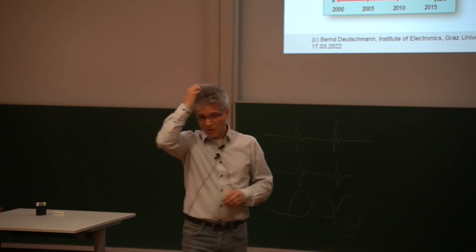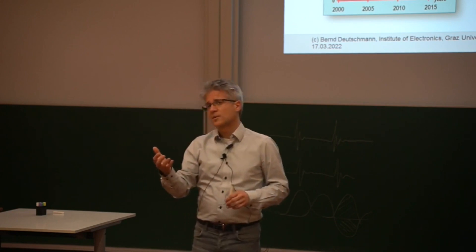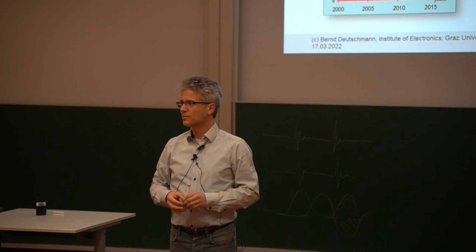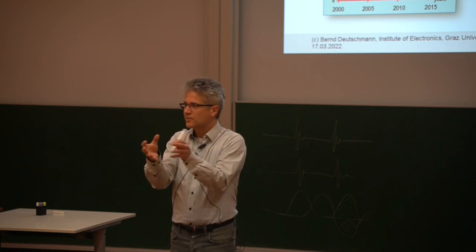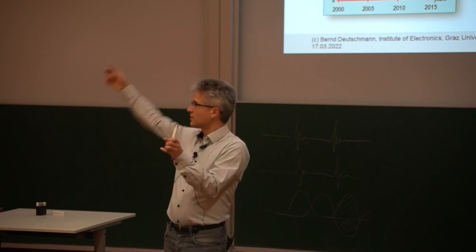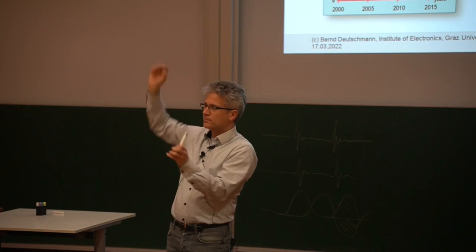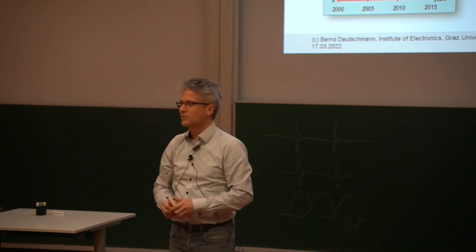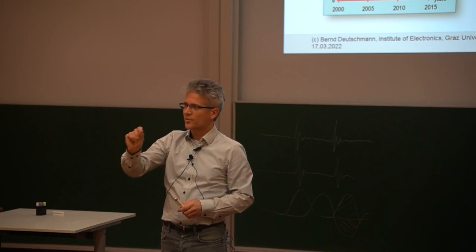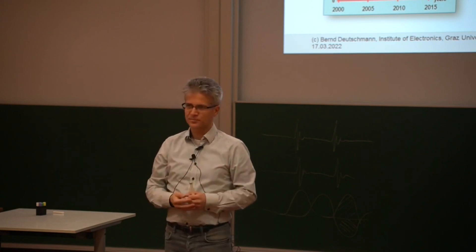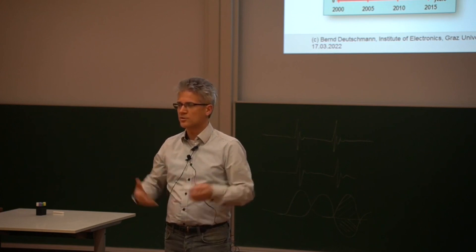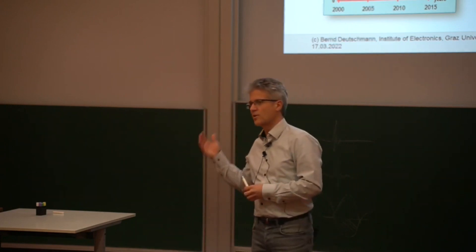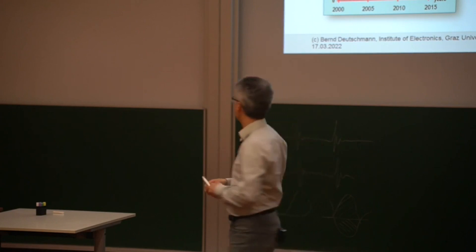On the other hand, modern technologies sometimes also get more robust — more robust against radiation, for example — because the gate area is not that big anymore. So the likelihood that a radiation particle is really hitting exactly this gate is not that high, and there is also not that much volume in the gate for charge to accumulate. So very often with modern technologies, things are getting better — at least that was the case in recent years, but not for all things. For RF interference or transient disturbances, the situation can get more critical.